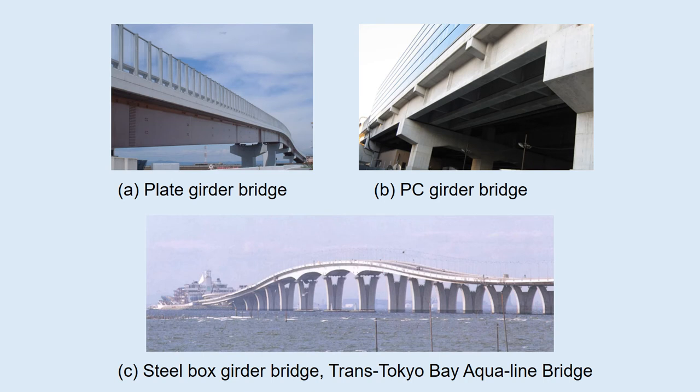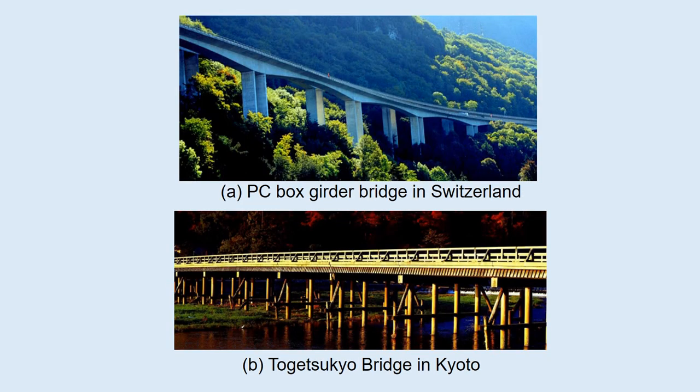Here are examples of girder bridges. A is a typical plate girder bridge. B is a PC girder bridge with a T-section. C is a steel box girder bridge — this is the Trans-Tokyo Bay Aqua-Line bridge. I was one of the main designers of this bridge. Other examples include a PC box girder bridge in Switzerland, and a timber girder bridge, the Togetsukyo.